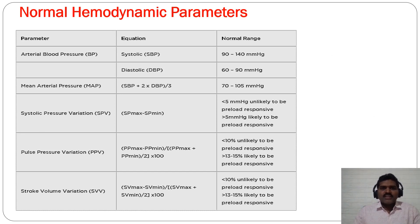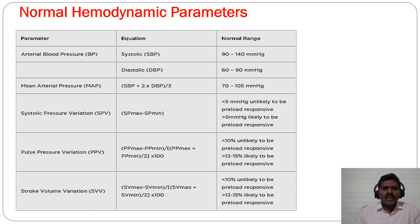Let's review normal hemodynamic parameters used day-to-day in the emergency department. Arterial blood pressure: normal systolic is 90–140 mmHg, diastolic 60–90 mmHg. Mean arterial pressure (MAP) is the most important measurement because it indicates tissue perfusion throughout the cardiac cycle. It is calculated as: MAP = (SBP + 2×DBP) / 3. The normal MAP is 70–105 mmHg.